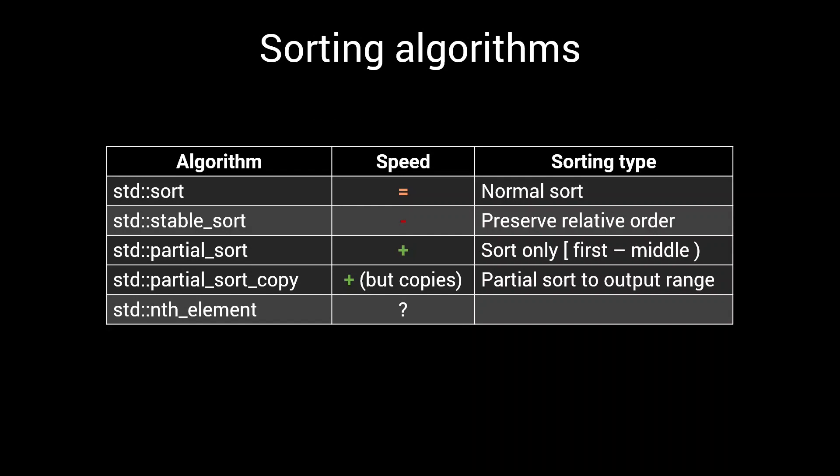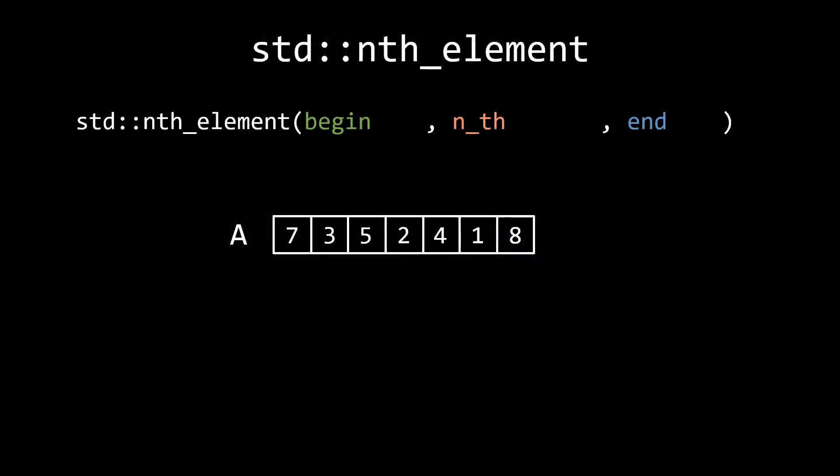The fastest sorting algorithm that we'll discuss today is nth element, where partial sort can be used to sort only a part of the range. nth element is used to sort just enough that a single element is guaranteed to be in the correct position. This element is referred to as the nth element and is indicated by the second iterator passed to the algorithm. If we now execute nth element, two things are going to happen.